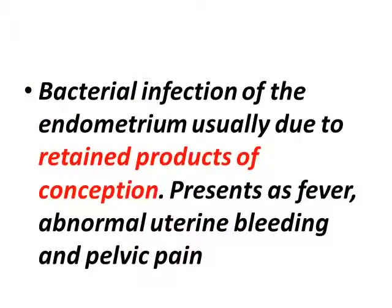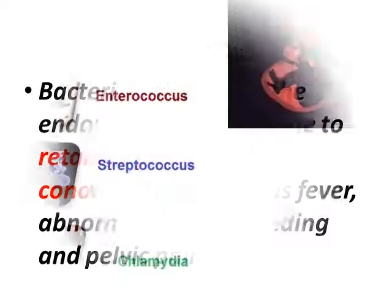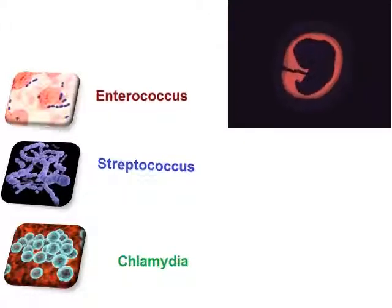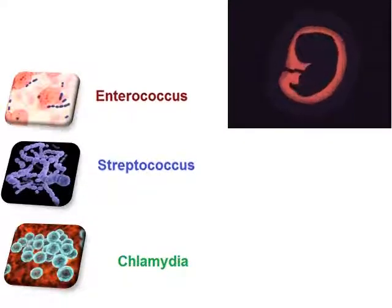Bacterial infection of the endometrium, usually due to retained products of conception, presents as fever, abnormal uterine bleeding, and pelvic pain. The organisms in pregnancy-related endometritis are enterococcus, streptococcus, and chlamydia.